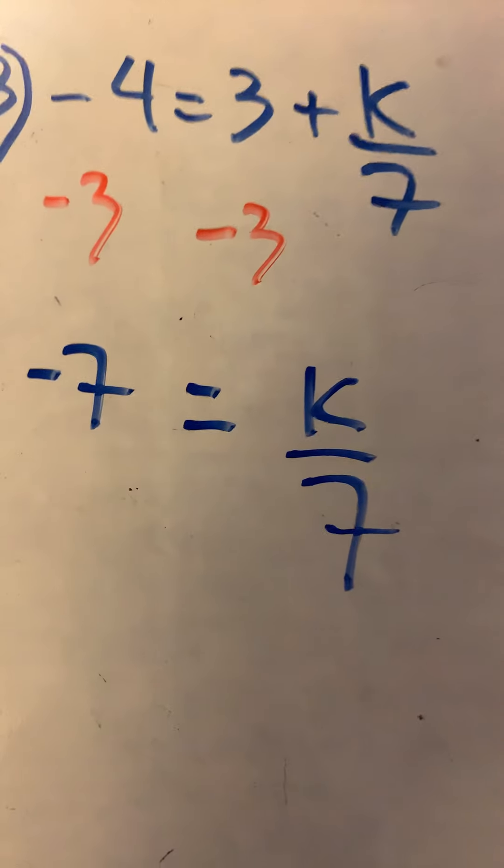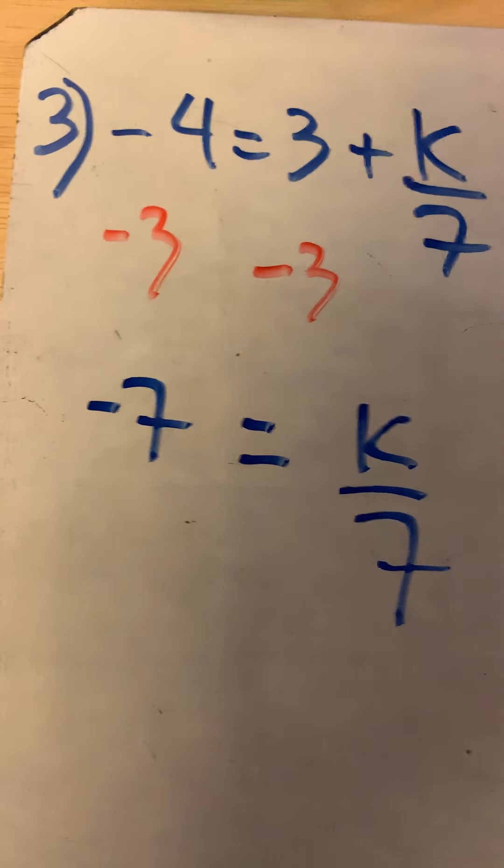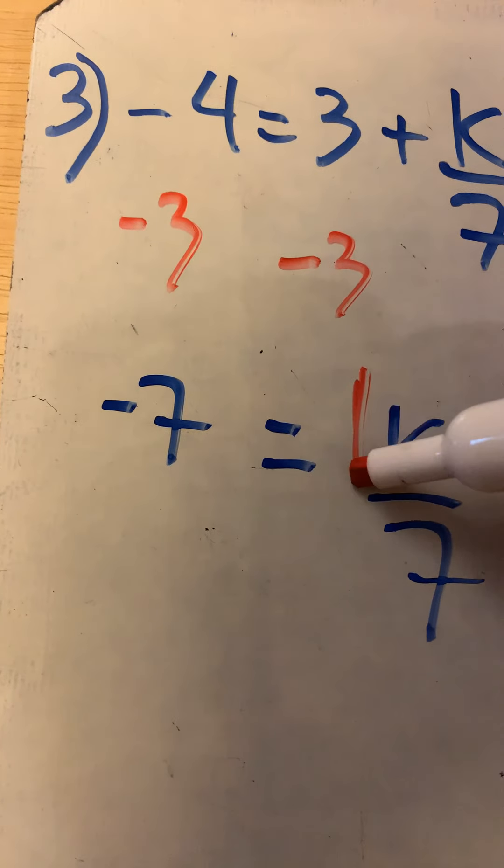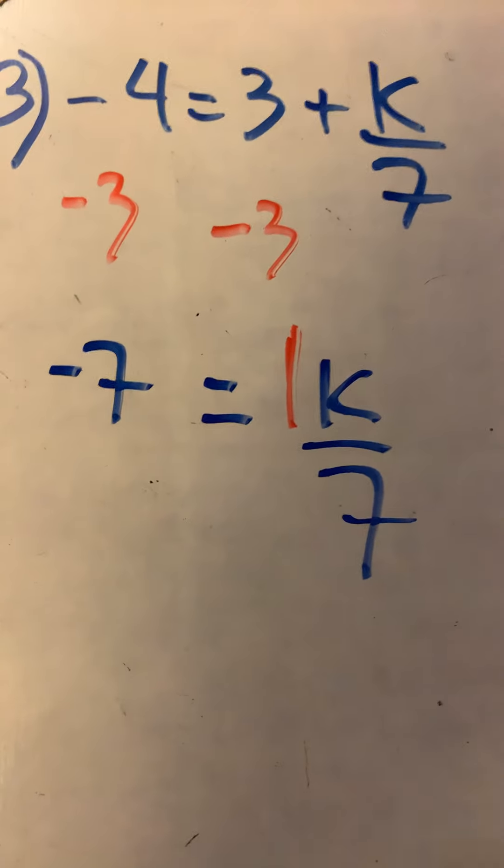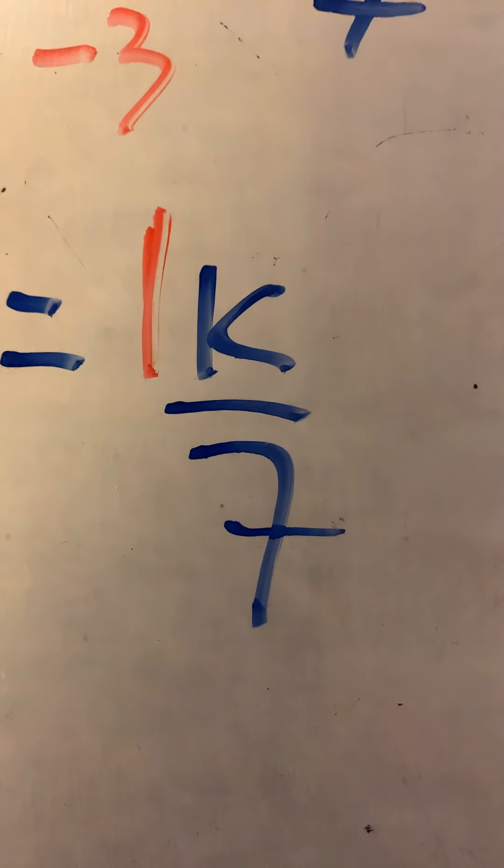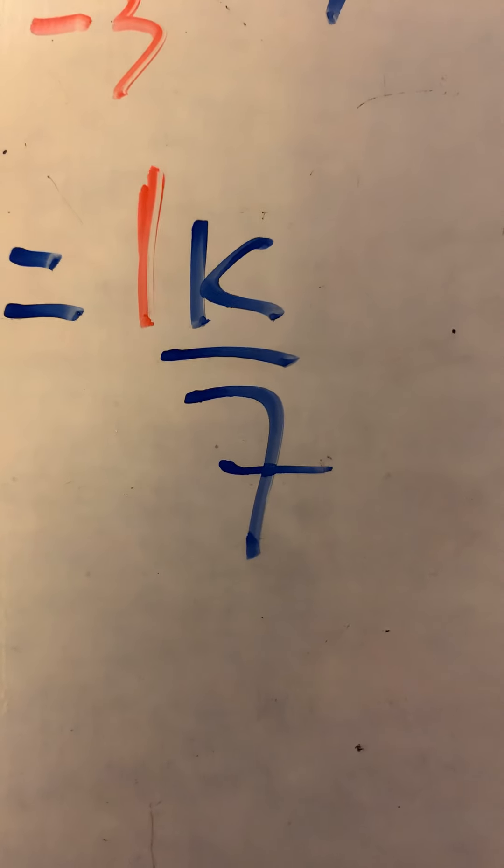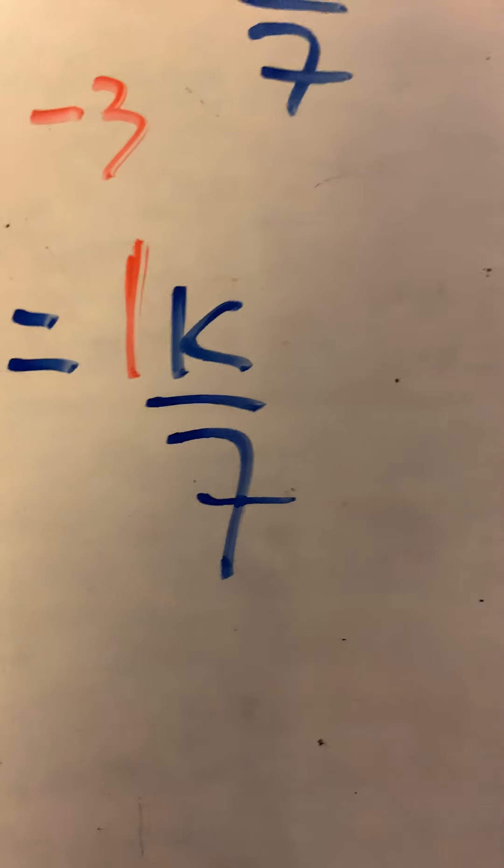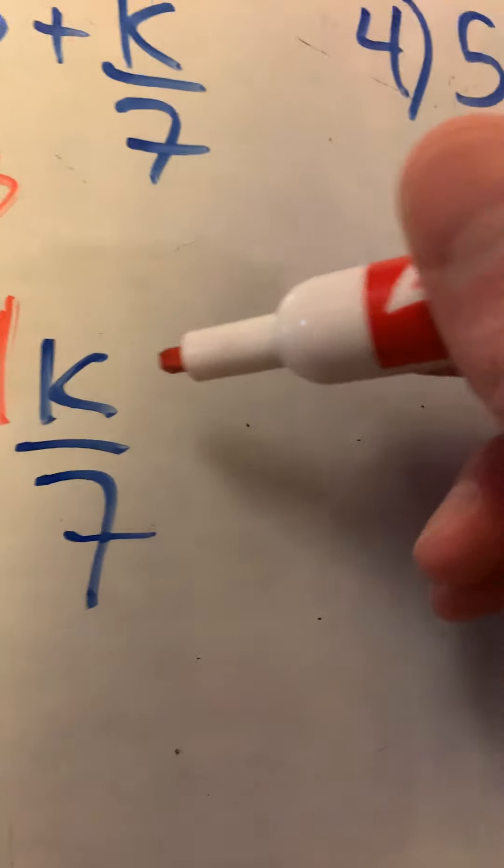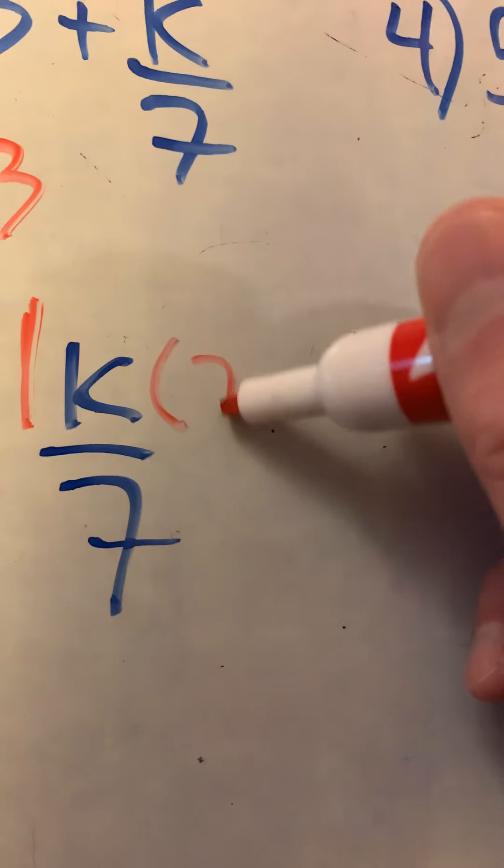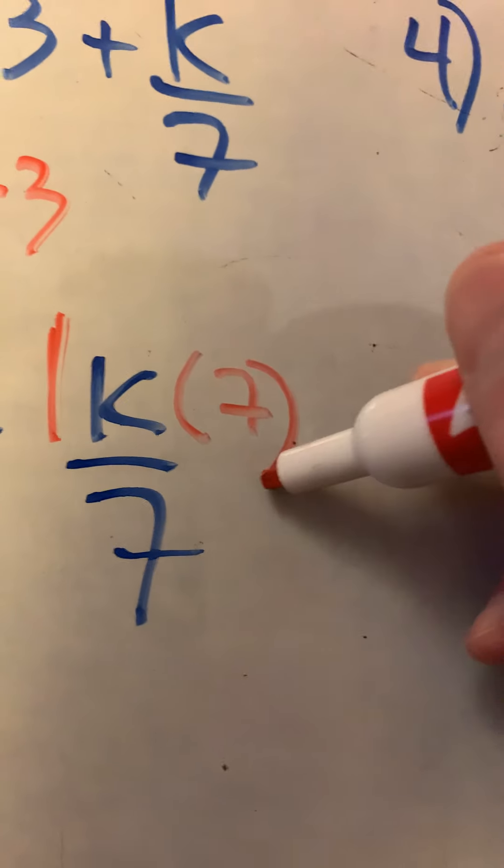And always remember, even though we don't see it, there's a one in front of that k. Now it's k/7. To finish solving this equation, we multiply both sides by the opposite of divide by seven. The opposite of divide by seven is to multiply by seven.